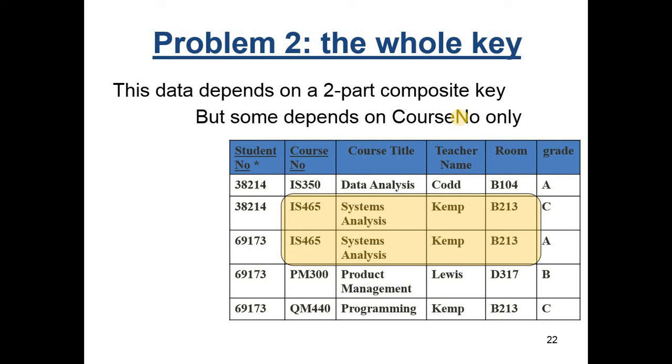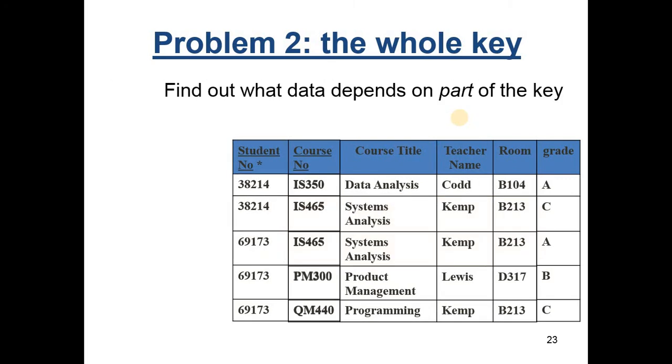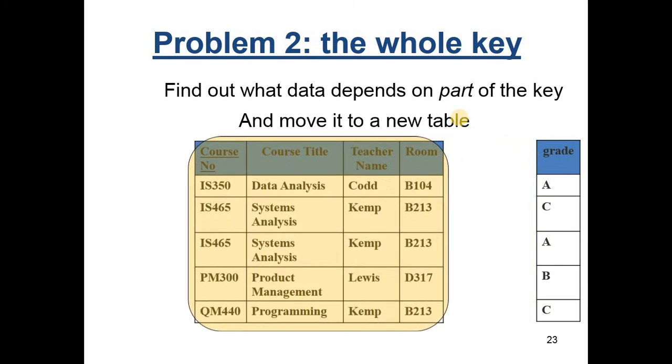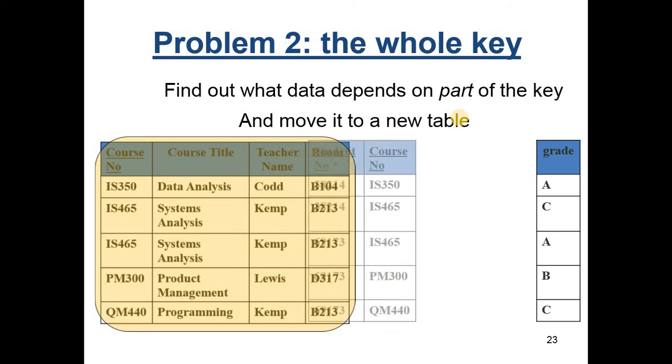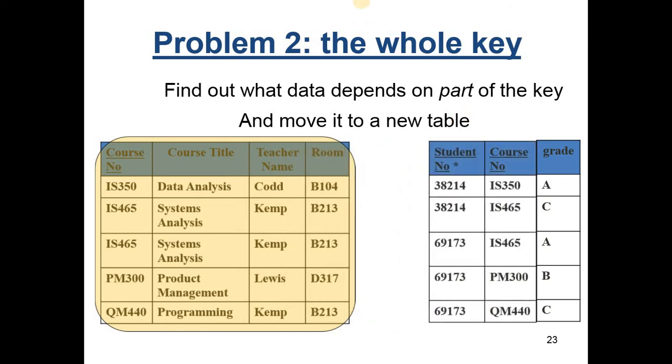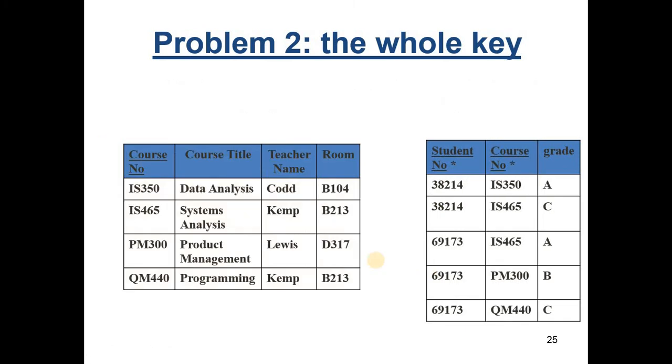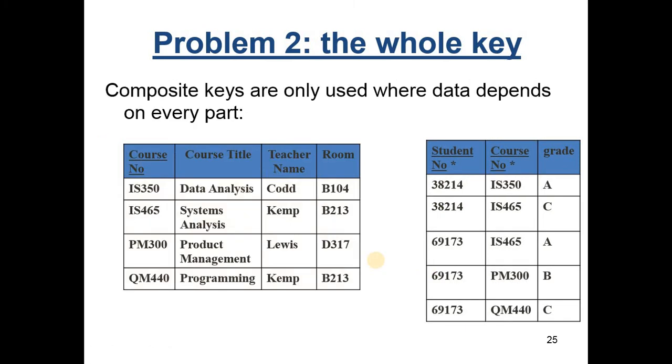There's a two-part composite key, but some of the data does not need this two-part composite key. What do we do when we identify a problem? Cut the data in two. There. I've lost the student number. There it is. In one part of the data I've got the course number and everything that depends on the course number. And in the other I have the grade because the grade depends on both. And so that was the part of the data for which I really need a composite key. Here it is cleaned up. Now we only have compound keys where we really need them.